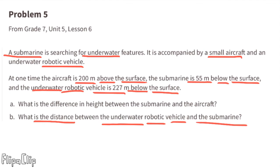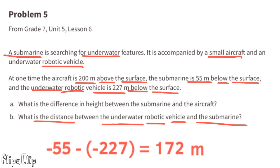Part B: the difference between the underwater robotic vehicle and the submarine is negative 55 meters minus negative 227 meters. The difference between the two is 172 meters.